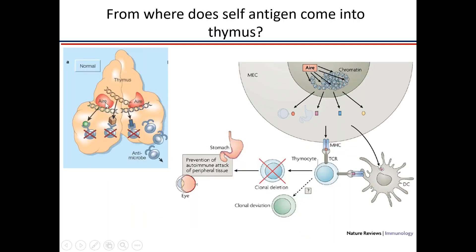AIRE causes proteins from every organ — eyes, stomach, everywhere — to be expressed in the thymus. Cells that recognize these with great affinity will die. The disease caused by AIRE mutation is APS1 — autoimmune polyendocrinopathy syndrome type 1.